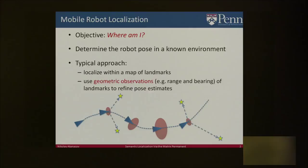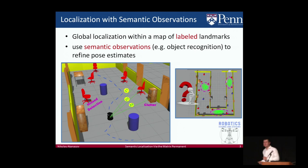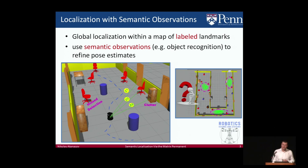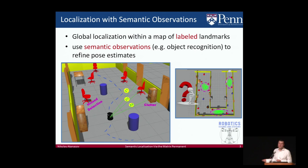In contrast to the traditional approach, we propose to use recent advances in object recognition and extract semantic information from the robot's sensors, then localize within a prior map where landmarks are labeled with semantic information. This means the robot has a map with chairs and doors, and online it receives RGB images, detects these objects, and uses these measurements to improve its localization.